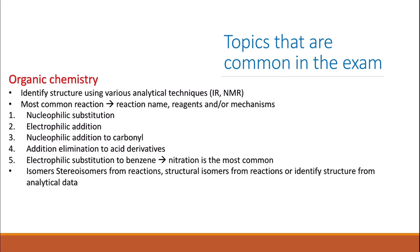There are always questions about isomers, which are normally not a separate question but arise from reactions — for example, stereoisomers from nucleophilic addition to carbonyl groups, or structural isomers from reactions giving major and minor products. Last year there was a big question where they gave the molecular formula for different structural isomers along with analytical data — proton NMR — and asked you to identify the structure of each isomer.